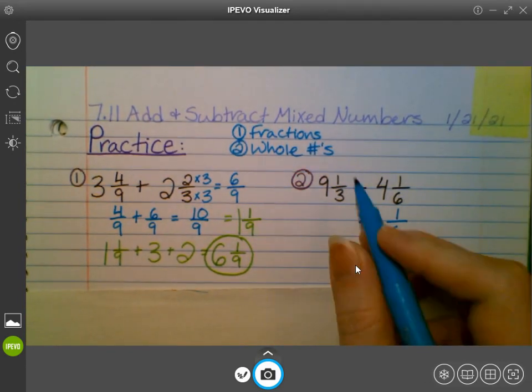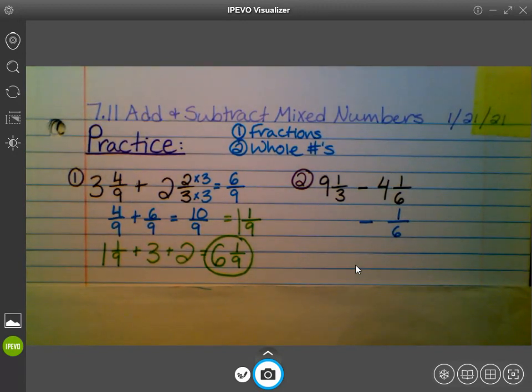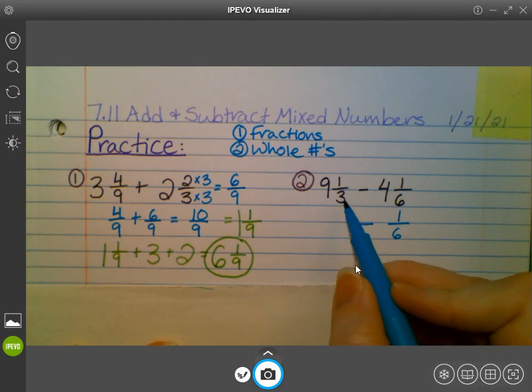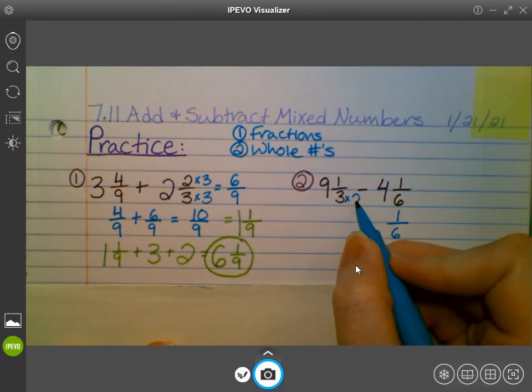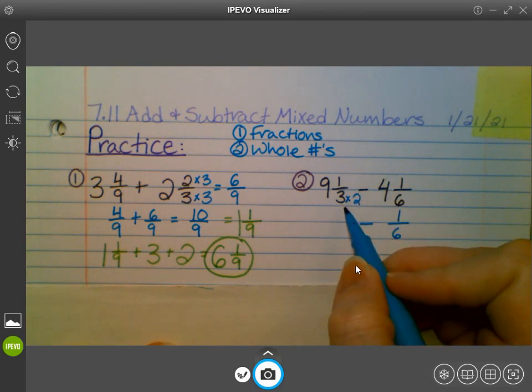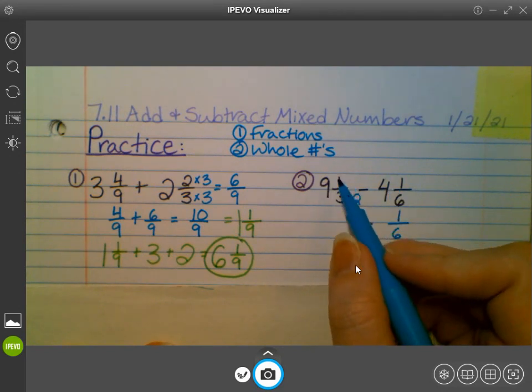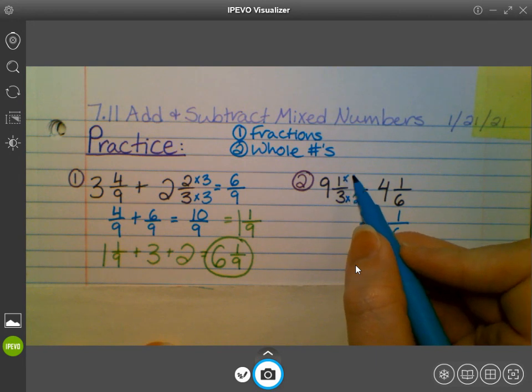However, 1 3rd, I need to do something to that in order to make it to where the denominator is 6. So if I want to turn my 3 into a 6, I have to multiply it by 2. Whatever I do to the denominator, I have to do to the numerator. So I'm also going to multiply that by 2.